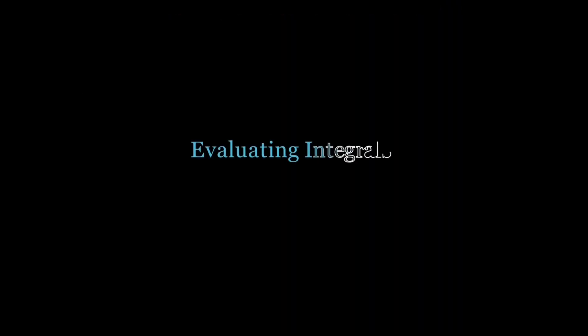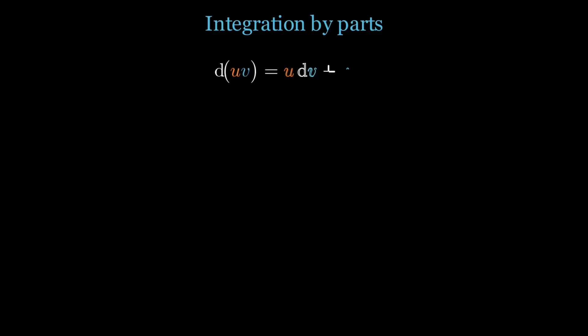So, where substitution unravels the chain rule, integration by parts unravels the product rule. Think of it this way. The product rule tells you how the derivative of u times v splits into two pieces. If we integrate that relationship, we can rearrange it to swap the burden from one factor to the other. The trick is in choosing. Let u be the part that gets simpler when you differentiate it, and dv be the part that you can integrate without trouble.